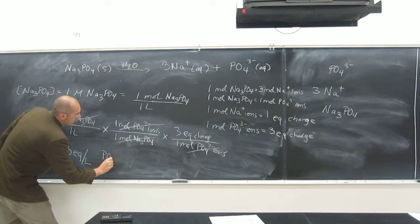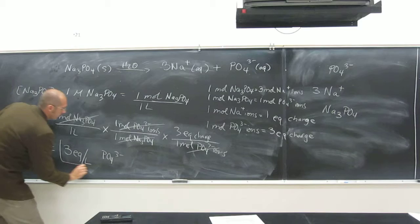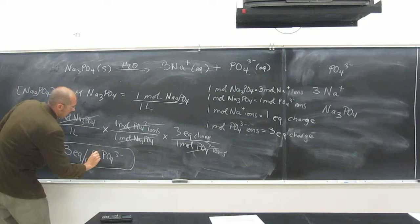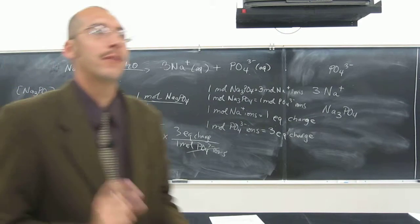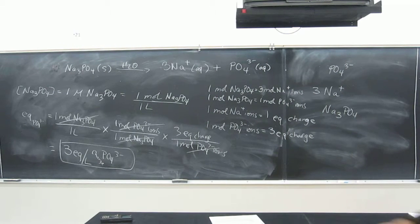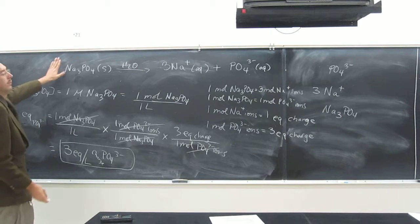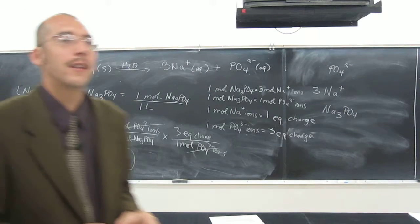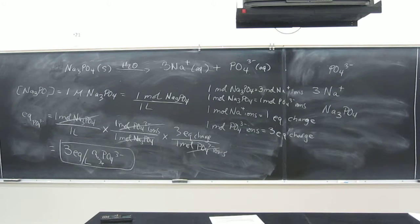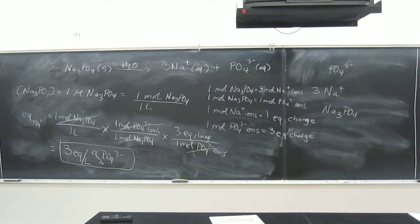Three equivalents per liter of charge from the phosphate — three. That makes sense, because the charges always have to balance. You knew that from the beginning. Are there any questions? The next steps just keep going — molarity, molality, whatever. You just have to keep finding these step-by-step conversion factors in order to convert one unit to the other, and remember which step converts which.